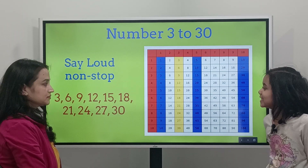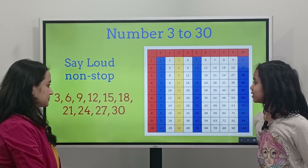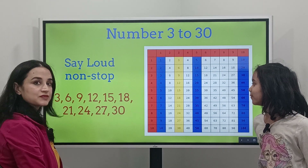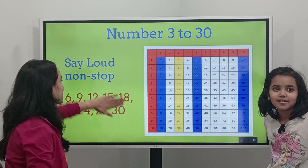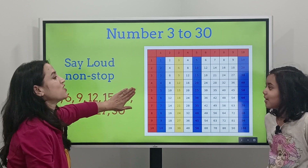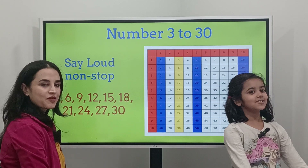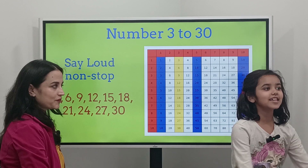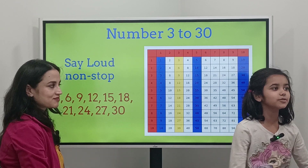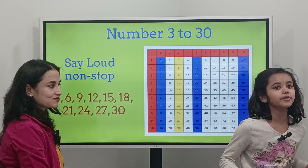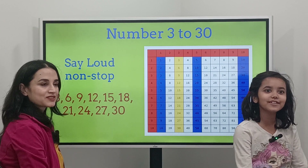Three, six, nine, twelve, fifteen, eighteen, twenty-one, twenty-four, twenty-seven, thirty. Okay, now can you do it without looking? Three, six, nine, twelve, fifteen, eighteen, twenty-one, twenty-four, twenty-seven, thirty.